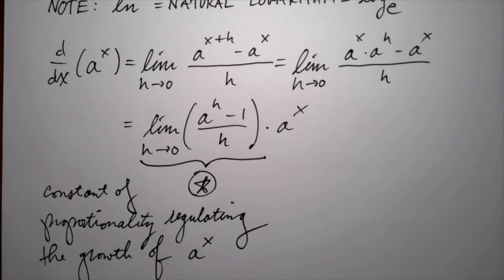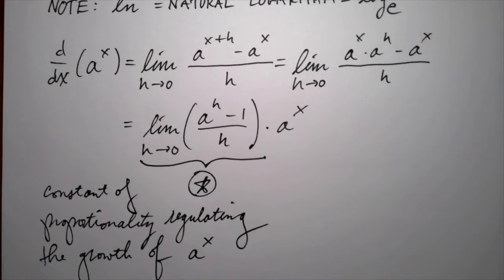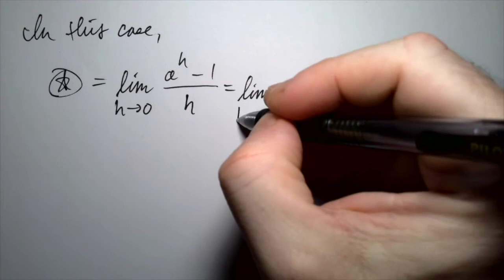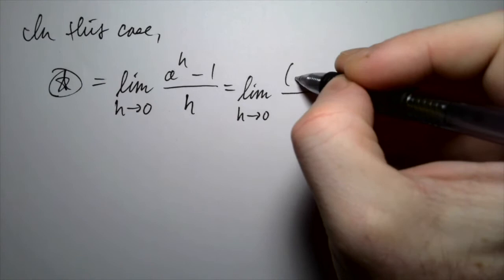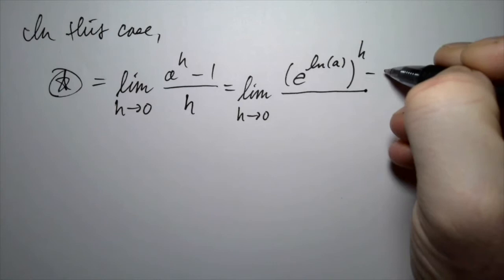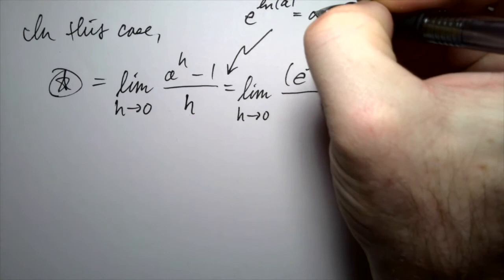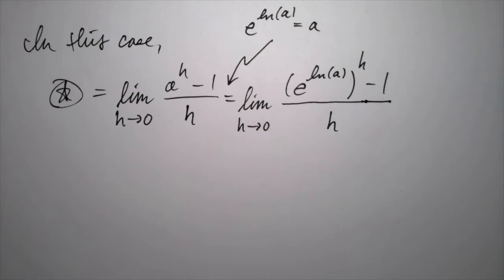We need to figure out what that constant of proportionality is. We can evaluate it by using the fact that a equals e to the ln of a. That's the trick we're going to use. It comes from the fact that the exponential and the natural logarithm undo each other — e to the ln of a equals a — so we make that replacement.